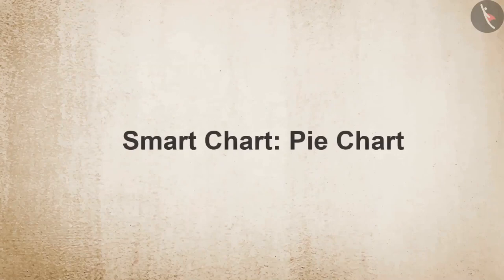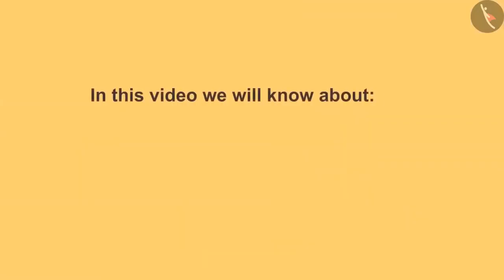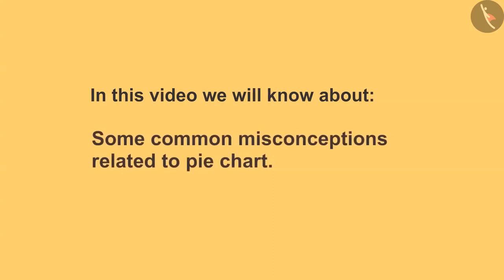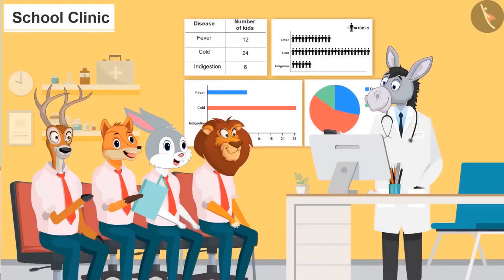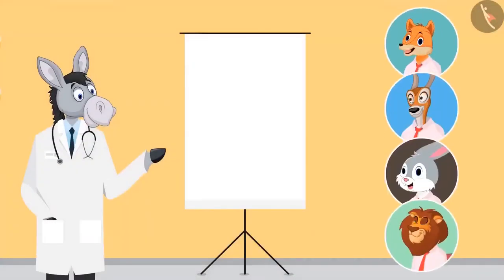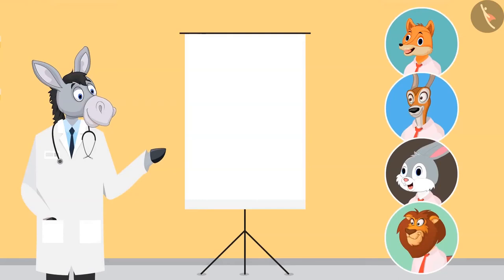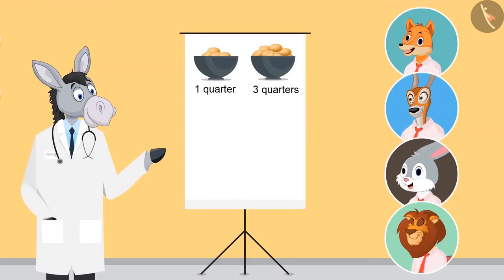Smart Chart. Pie Chart. In this video, we will know about some common misconceptions related to pie chart. Sometimes we consider one-fourth and three-fourths to be equal while calculating. Is this a right belief? First, tell me which is more — one-quarter of potatoes or three-quarter of potatoes? Three-quarters.